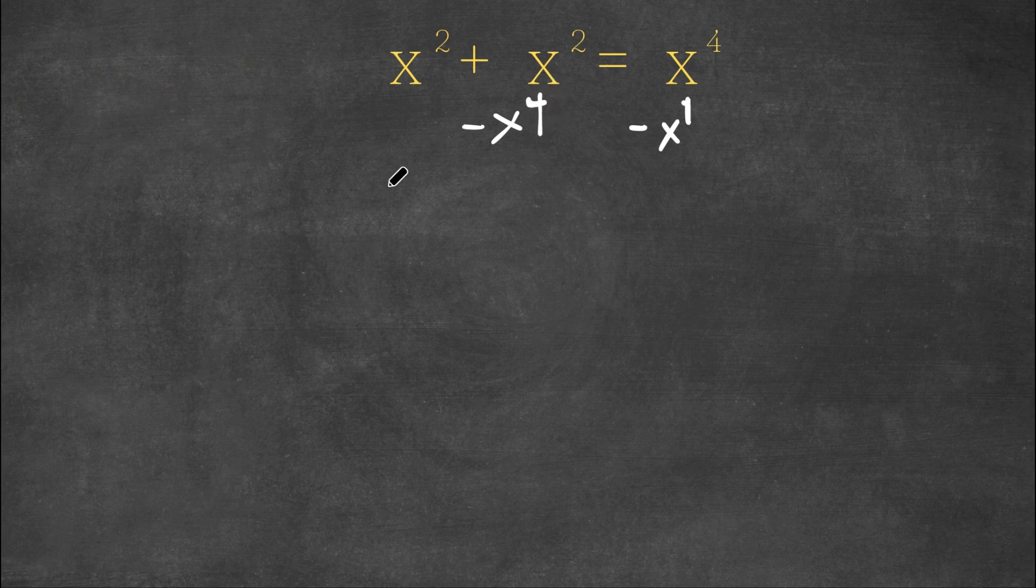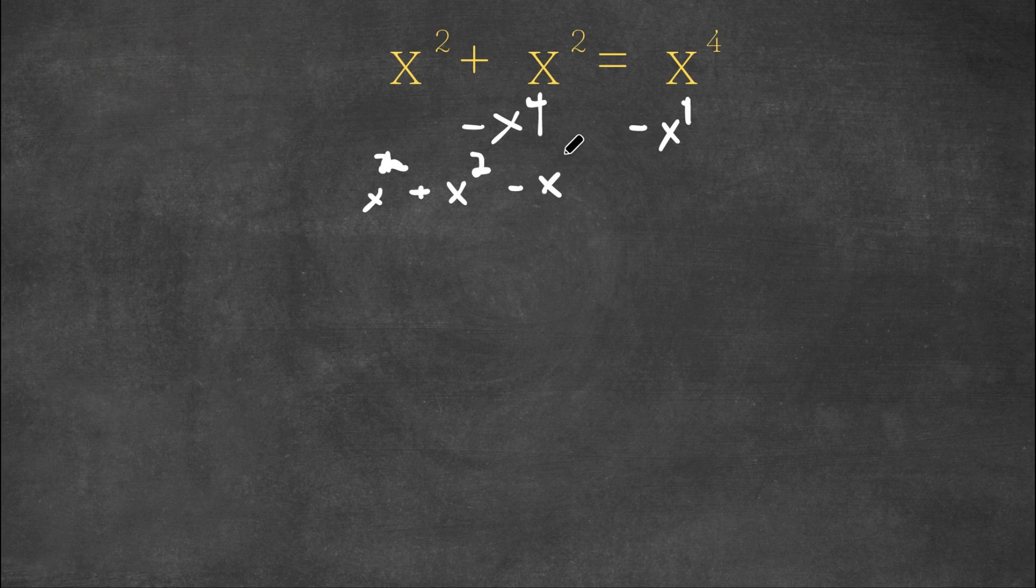So now we have x squared plus x squared minus x to the power of 4 is equal to 0. Now what I'm going to do is I'm going to factor out the greatest common factor of all these terms, which is actually x squared.